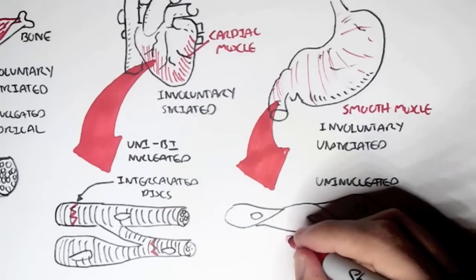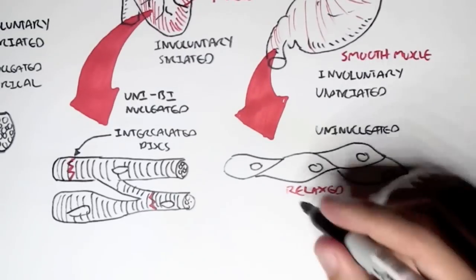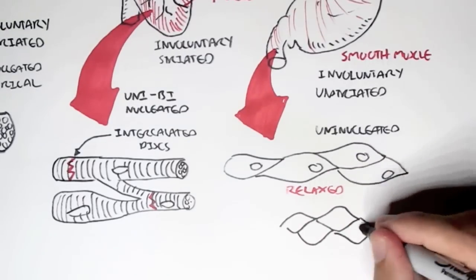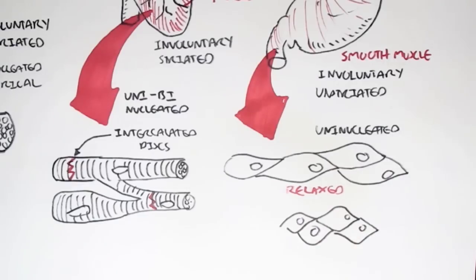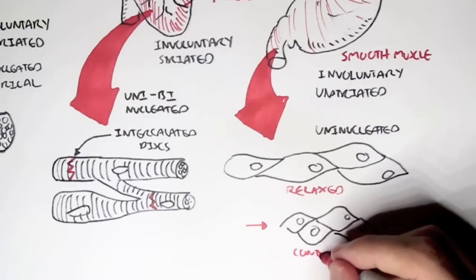Each cell is also uninucleated in that it contains only one nucleus. For example, this group of smooth muscle cells are in a relaxed position. When they contract, they squeeze together, and when they squeeze together, this is what allows the movement of food down our gastrointestinal tract.